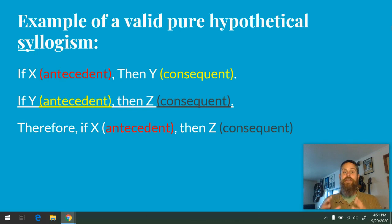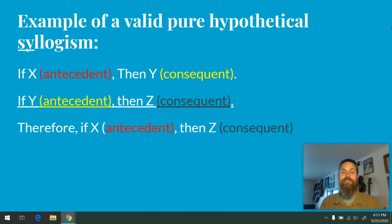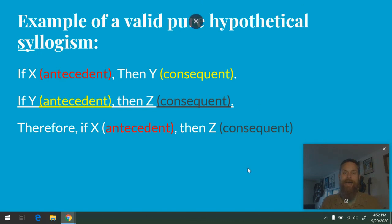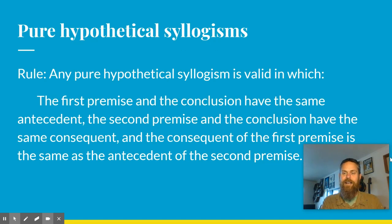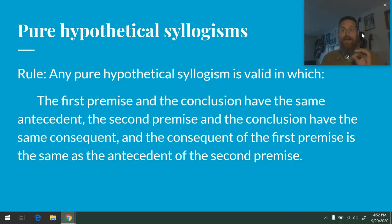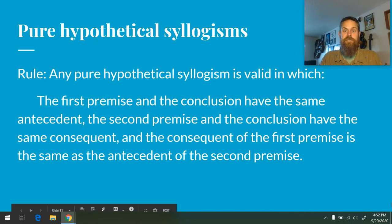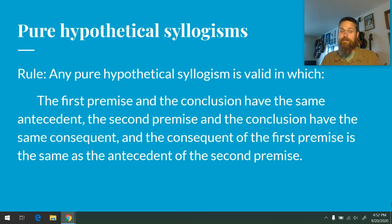If it passes that test, check: is the consequent of the first premise the antecedent of the second premise? If not, throw it out. If it is, move on to the third test: the consequent of the second premise must be the consequent of the conclusion. So one big rule may be better understood as three rules: same antecedent in first premise and conclusion; same consequent in second premise and conclusion; and the consequent of the first premise equals the antecedent of the second.